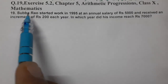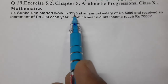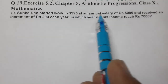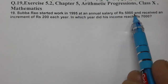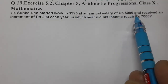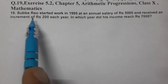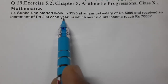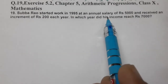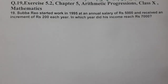Subba Rao started work in 1995 at an annual salary of Rs. 5,000 and received an increment of Rs. 200 each year. In which year did his income reach Rs. 7,000?